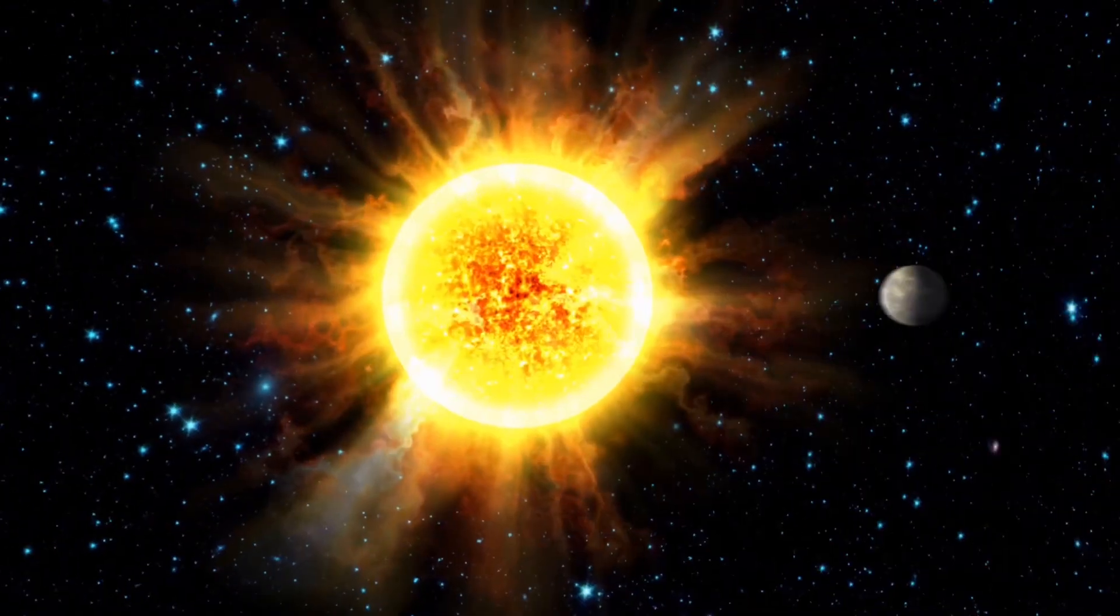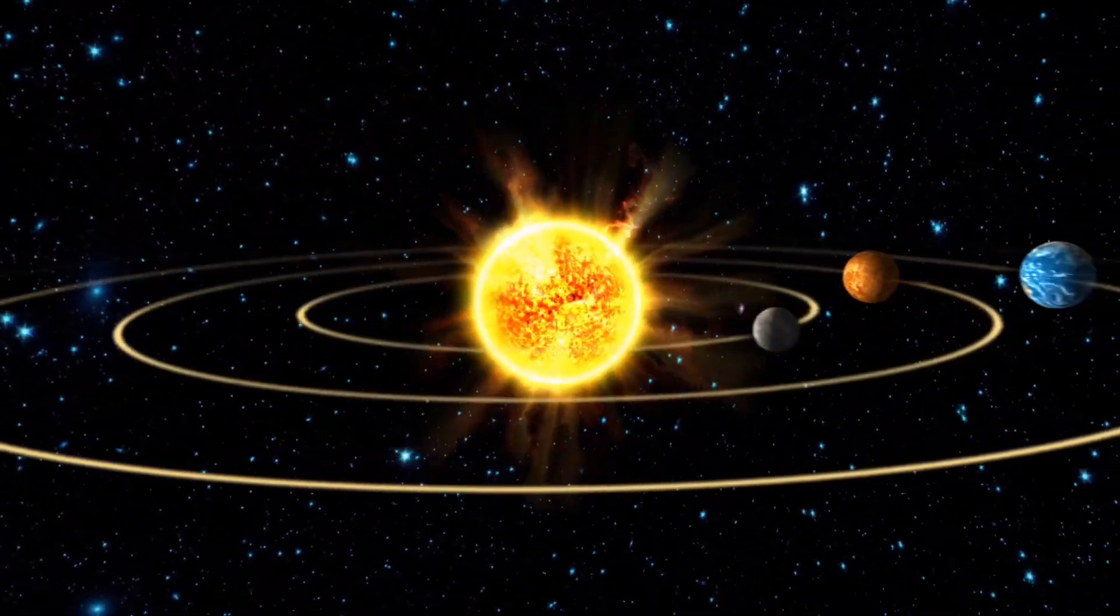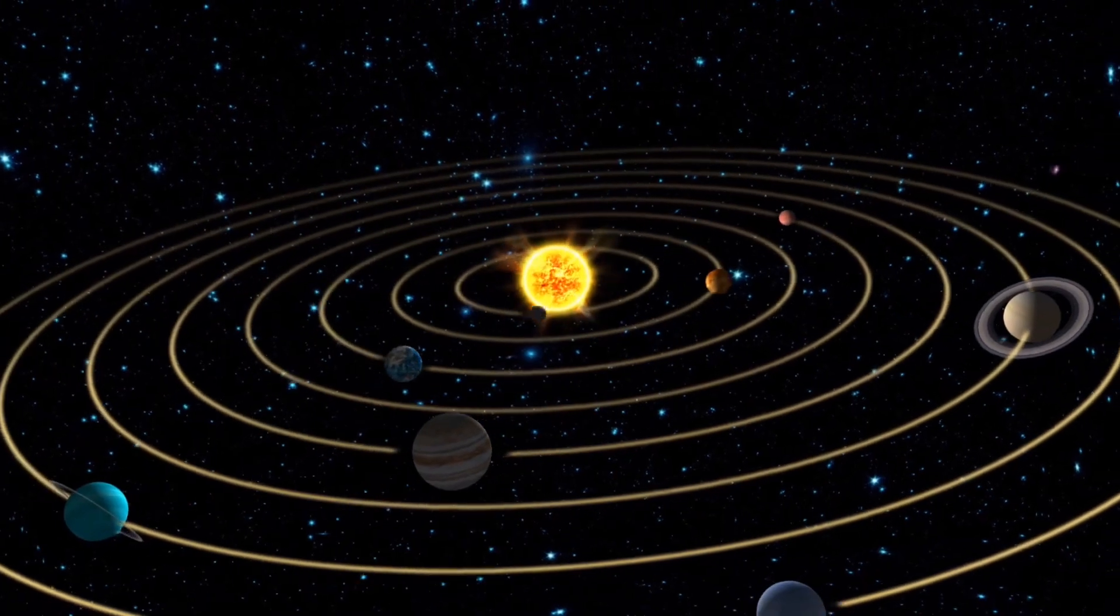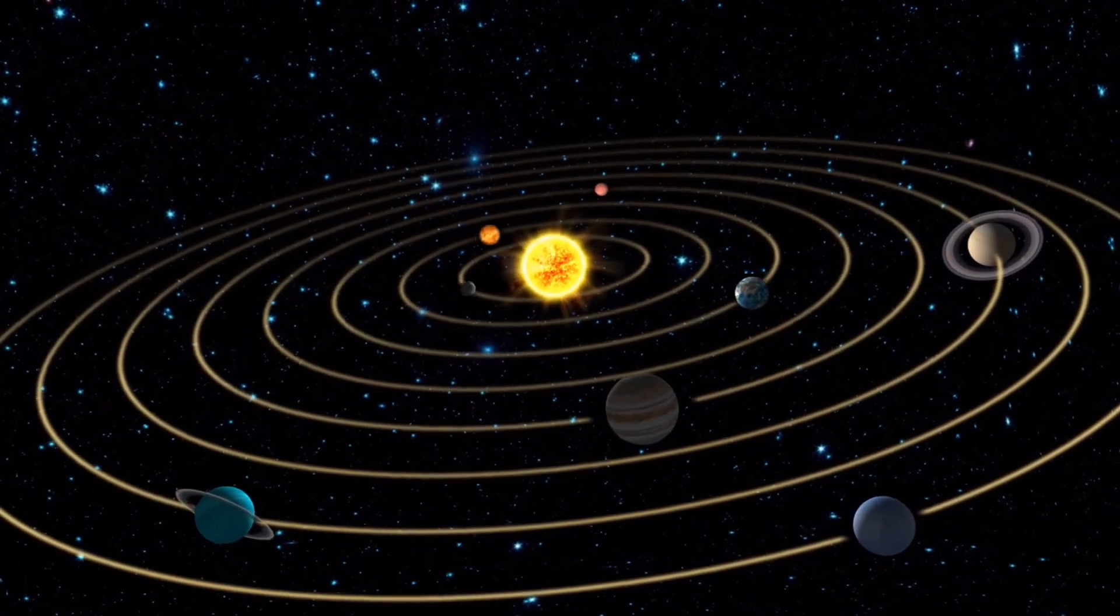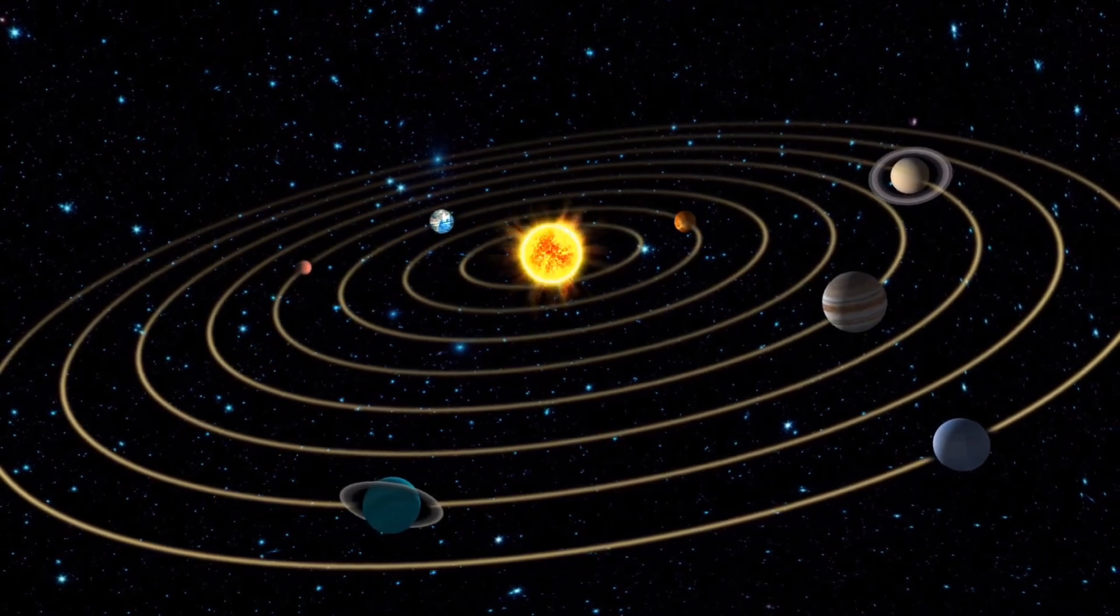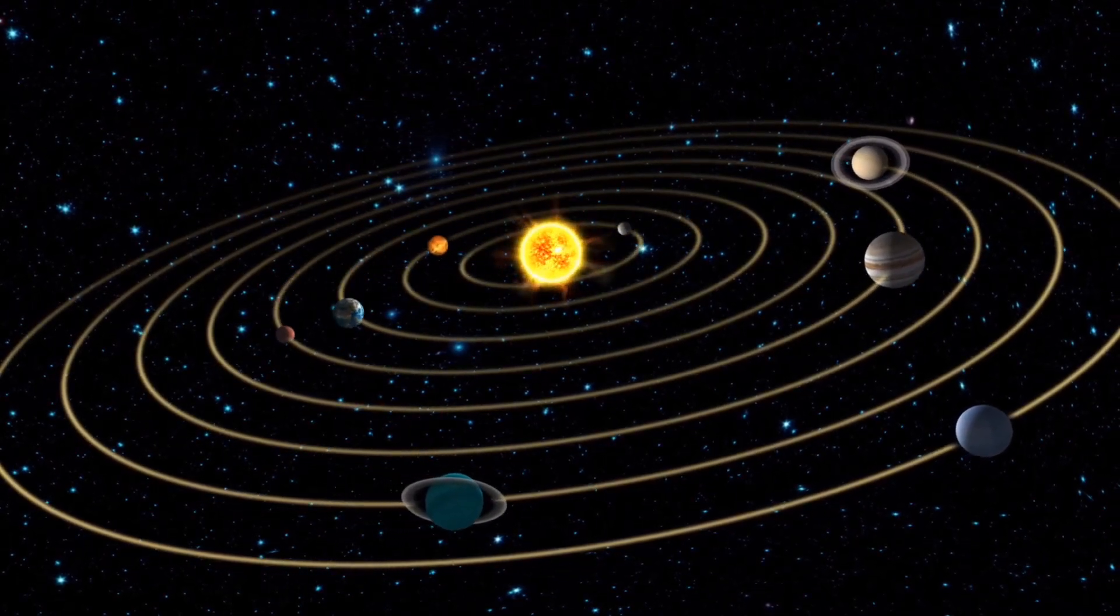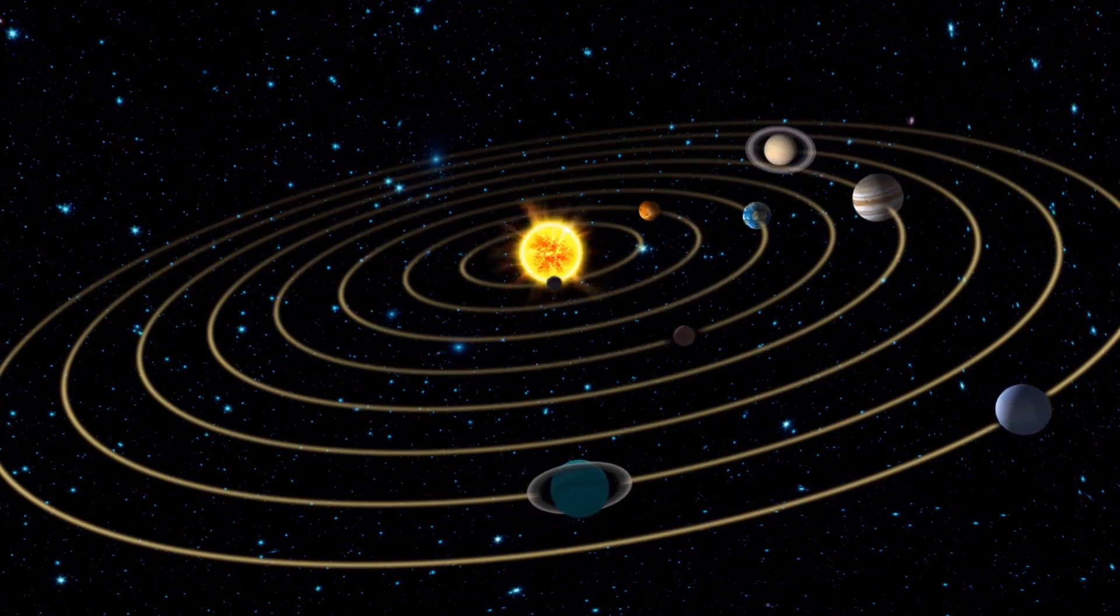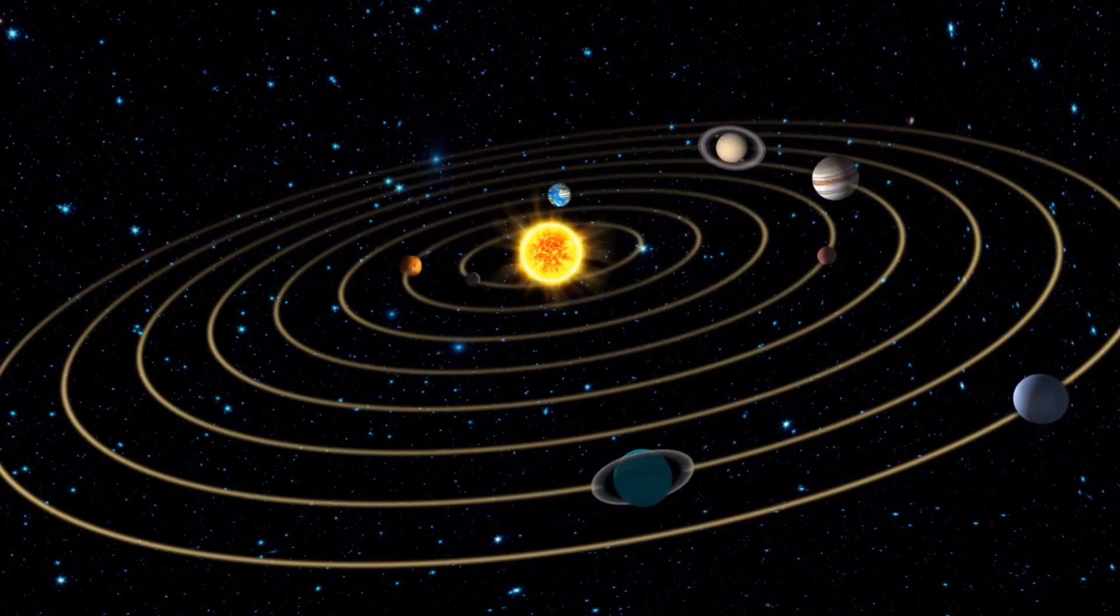The planets all go around the sun in different paths called orbits. Some orbits are more circular while others are more elongated. It takes each planet a different amount of time to complete one orbit around the sun. For example, it takes Earth about 365 days to go around the sun, which is what we count as one year.